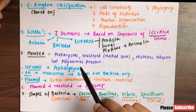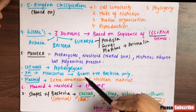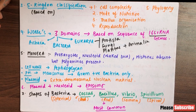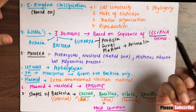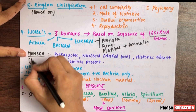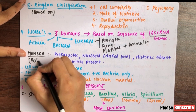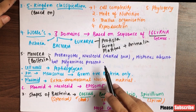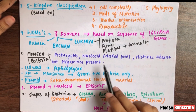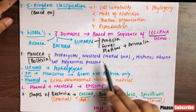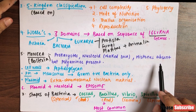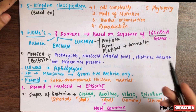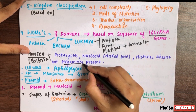Now let's discuss Monera, which are prokaryotes. Members of Monera are mainly bacteria. They are prokaryotes — their DNA is naked, forming a nucleoid. Histone proteins, the DNA packaging proteins, are absent. In their place, polyamines and basic proteins are present.